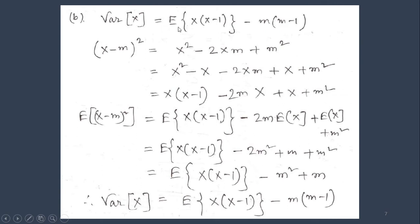Alternatively, variance of x equals E[x(x-1)] - m(m-1). We can prove it. Taking the same expression (x-m)² = x² - 2xm + m², we subtract 1x and add 1x, then take x as common, giving x(x-1). Taking expectation on both sides: the left-hand side gives E[(x-m)²], and the right-hand side gives E[x(x-1)] - 2m * E[x] + E[x] + m². Since E[x] = m, this simplifies to E[x(x-1)] - 2m² + m² = E[x(x-1)] - m(m-1). Hence it is proved.